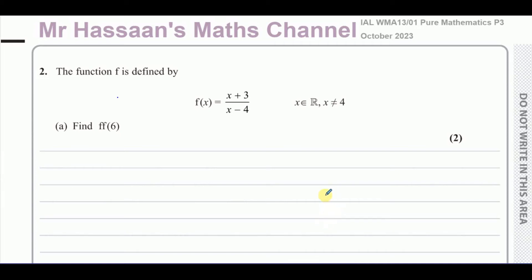Welcome back. This is Mr. Hassan's math channel. I'm now answering question number two from the October 2023 Pure Mathematics P3 paper from Edexcel International A-Level. This question is about functions. It says the function f is defined by f(x) = (x+3)/(x-4), where x is an element of the real numbers and x is not equal to 4.